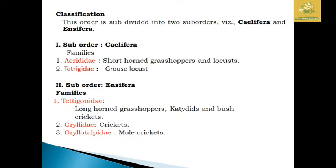In the suborder Caelifera, there are two families: Acrididae, which includes short-horned grasshoppers and locusts, and Tetrigidae, which includes grouse locusts. In the suborder Ensifera, the family Tettigoniidae includes long-horned grasshoppers, katydids, and bush crickets; Gryllidae comprises only crickets; and Gryllotalpidae comprises mole crickets.